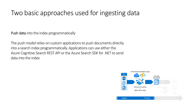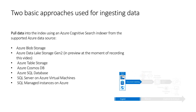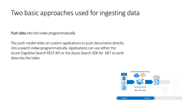The second approach is called 'push': we can push data directly into the index programmatically. The push model relies on custom applications to push documents directly into a search index. Applications can use either the Azure Cognitive Search REST API or the Azure Cognitive Search SDK for .NET to send data into the index. The pull approach is much easier because we can indicate the data source and Azure Cognitive Search will do the rest. In the push approach, we need a custom application to handle data ingestion.